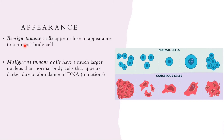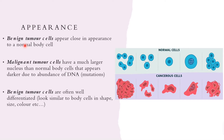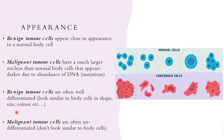Benign tumor cells are often well-differentiated — they are close in appearance to normal body cells, with similar shapes, sizes, and colors. Malignant tumor cells are often undifferentiated, meaning they don't look similar to normal body cells — they are different in shape, size, or color.